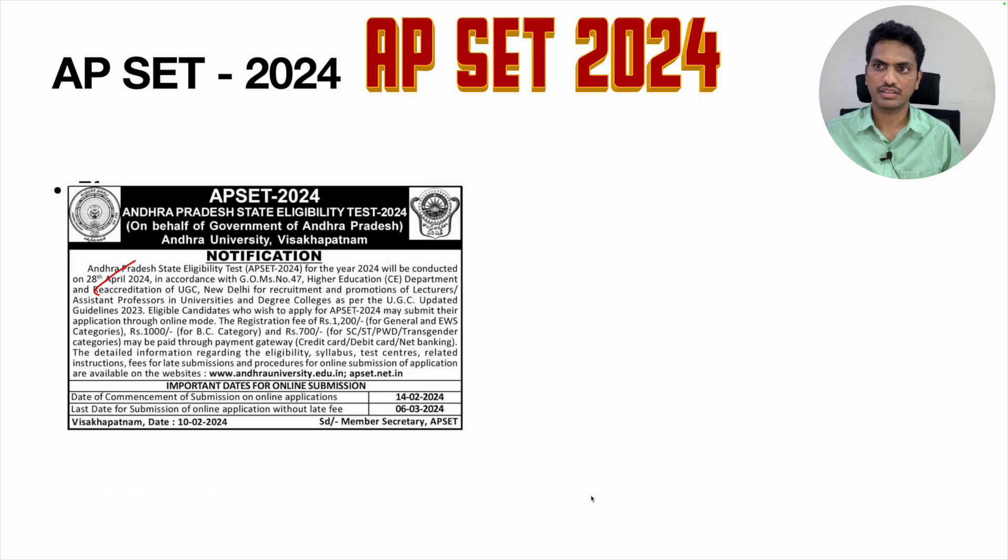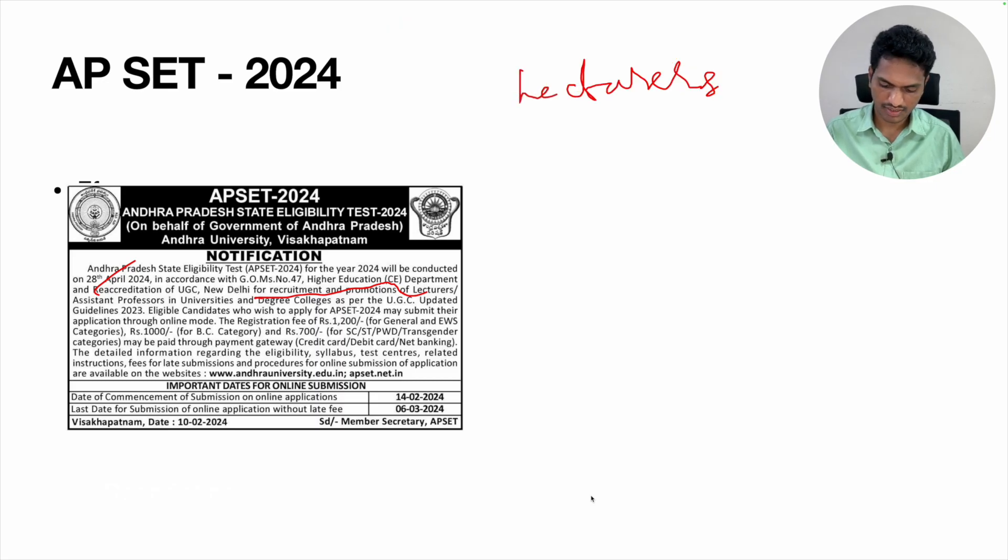There are around two and a half months for preparation. What is this exam? It is for promotion and recruitment of lecturers and assistant professors. Both are same salary, only the name is different.